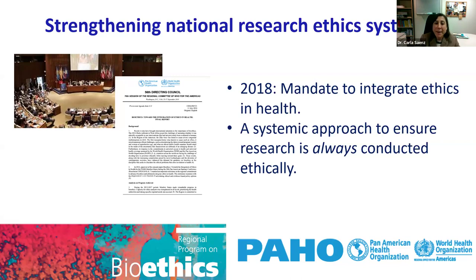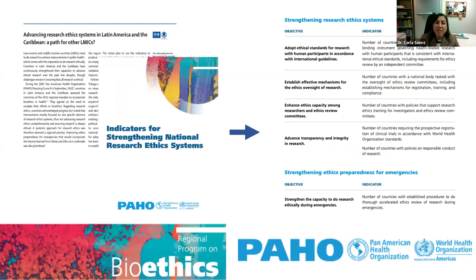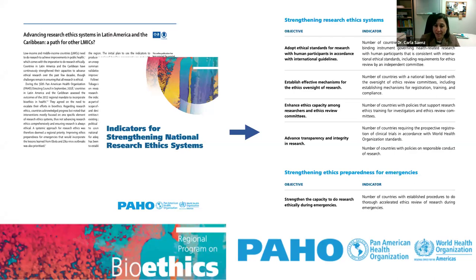Since we committed to move forward in research ethics with this systemic approach, we worked right away on developing indicators that address key components of a research ethics system. We have several publications, but perhaps most importantly the publication on the indicators for strengthening national research ethics systems, where you can see that we give great importance to ethics preparedness for emergencies, which has an important research aspect. We have a number of indicators, and the work we are presenting today has to do specifically with one of these indicators.